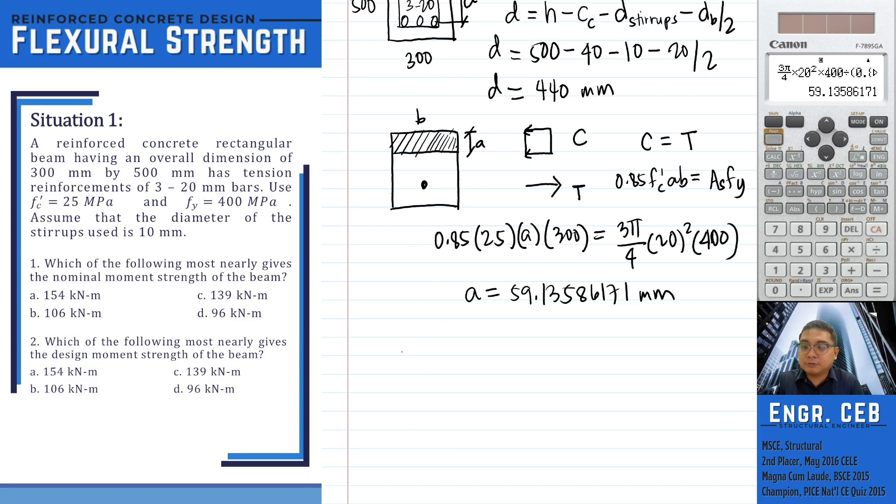First, we compute for the tensile strain, epsilon sub T, and that is 0.003 times D minus C over C. By the way, we have another variable here, which is C. C is what we call the depth of the neutral axis. How do we relate the value of A and C? They are related through the factor beta. A equals beta times C.